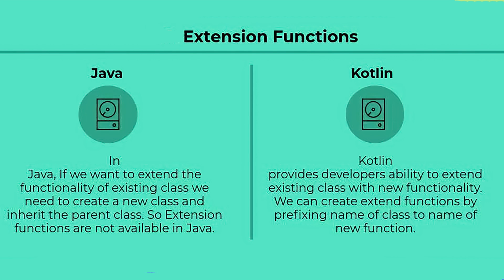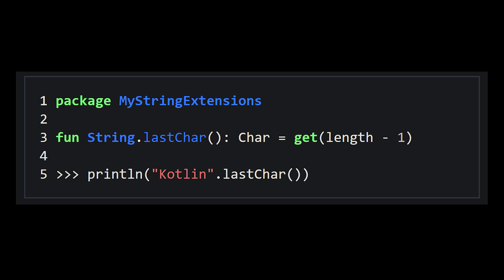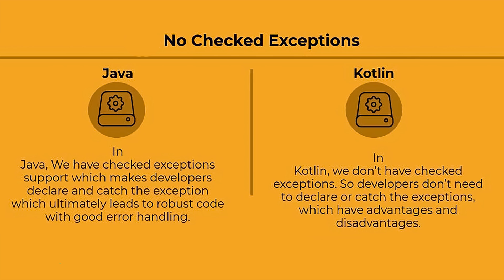Kotlin also gives you the ability to extend existing classes with new functionality. In Java, if you want to do this, you have to create a new class, inherit from the parent class, and then override your function there. In Kotlin, say you want to add a method to the string class — you don't need to create a new class. You can simply write string.lastChar to define a new method, and going forward every string will have that .lastChar method, which saves you a lot of code. One negative of Kotlin is that you don't have checked exceptions, whereas in Java this is required, which ultimately leads to more robust code with better error handling.